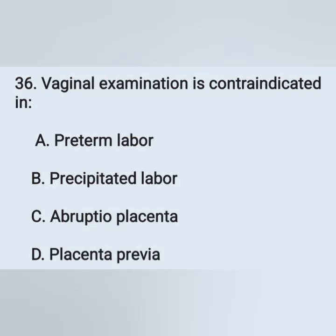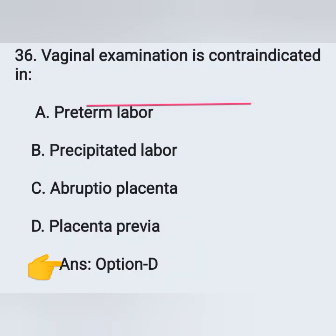Question 36: Vaginal examination is contraindicated in — option A, preterm labor; option B, precipitated labor; option C, abruptio placenta; option D, placenta previa. Vaginal examination is contraindicated in placenta previa. Option D is the correct answer. Placenta previa means the placenta is implanted partially or completely over the lower uterine segment, and there will be chances of bleeding.